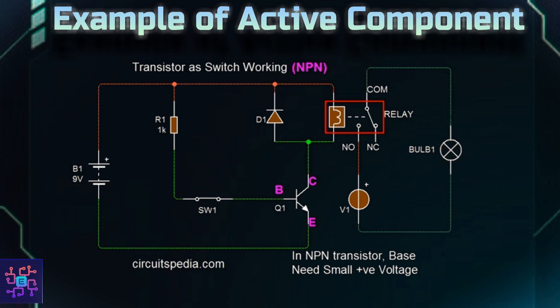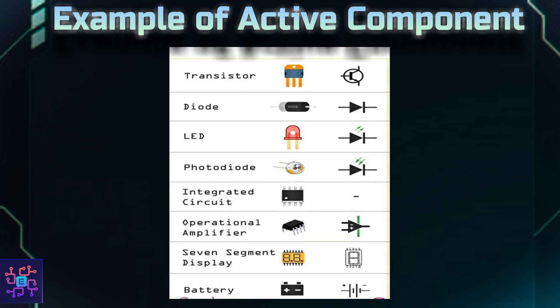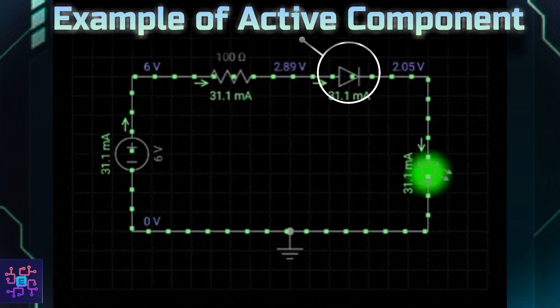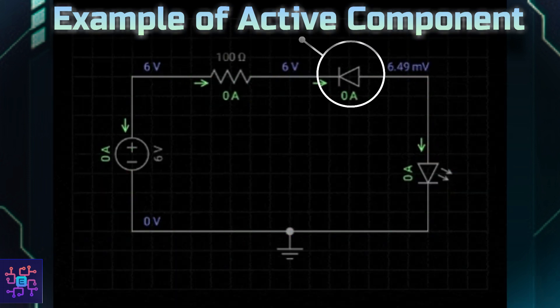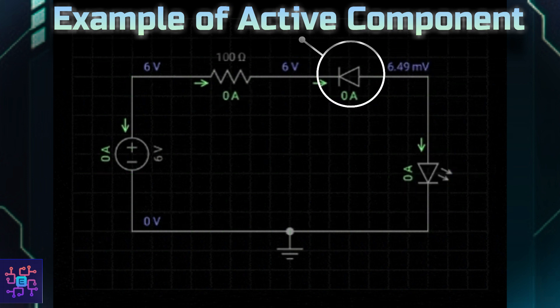If you notice, most active components have more than two terminals — one acts as input, the second as output, and one terminal to control the flow of current. Active components are placed in a circuit to control the flow and direction of current, to achieve the desired output.